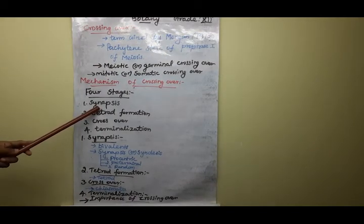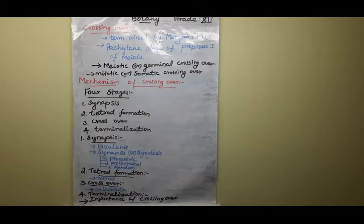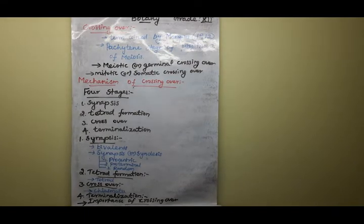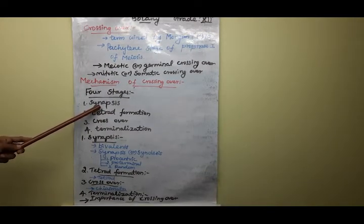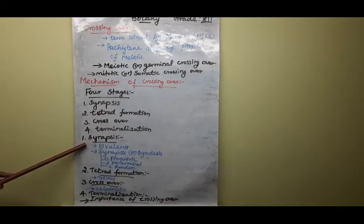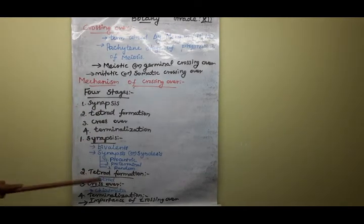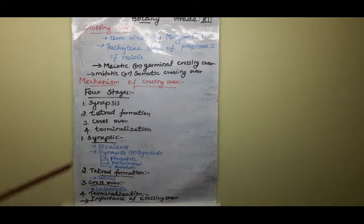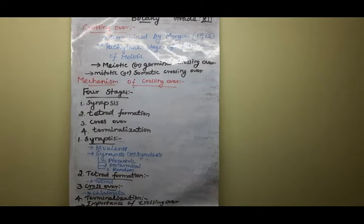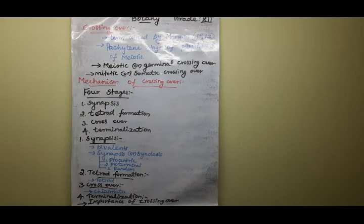Synapsis occurs during the pachytene stage of prophase I of meiosis cell division. Synapsis means the formation of the bivalent — the pairing of homologous chromosomes. That process is called synapsis. This pairing phenomenon or process is called synapsis, and it comes in three types.